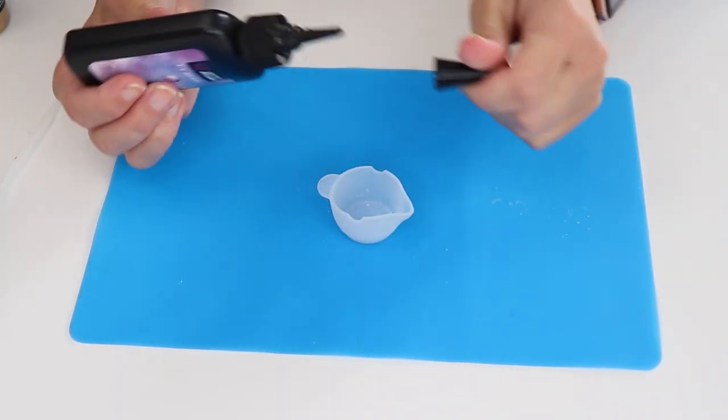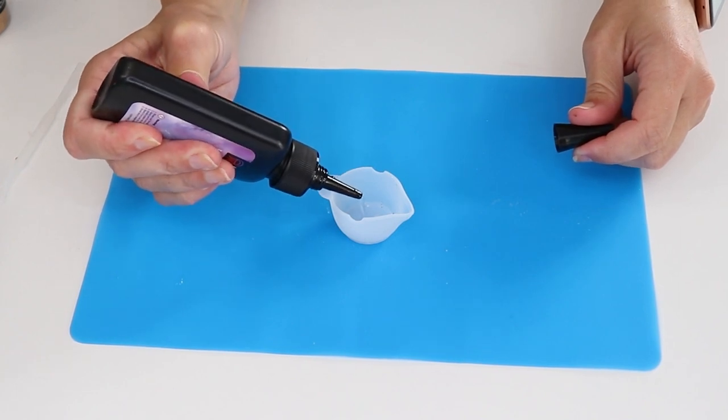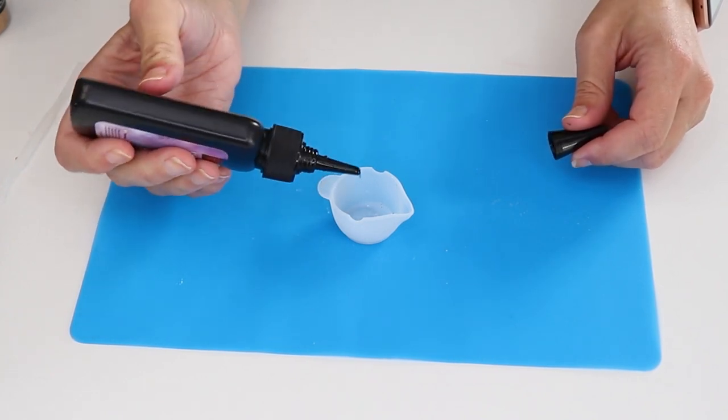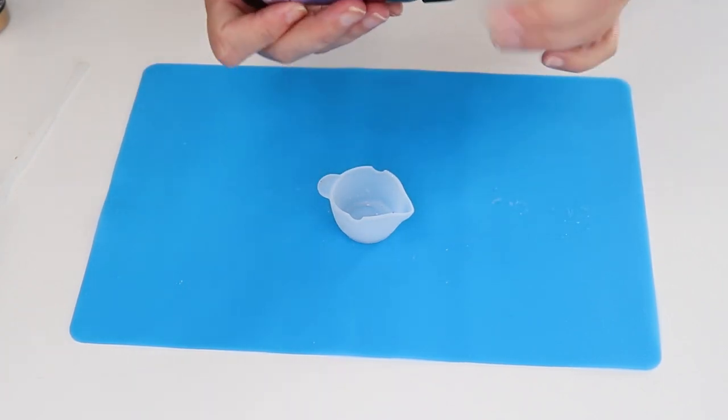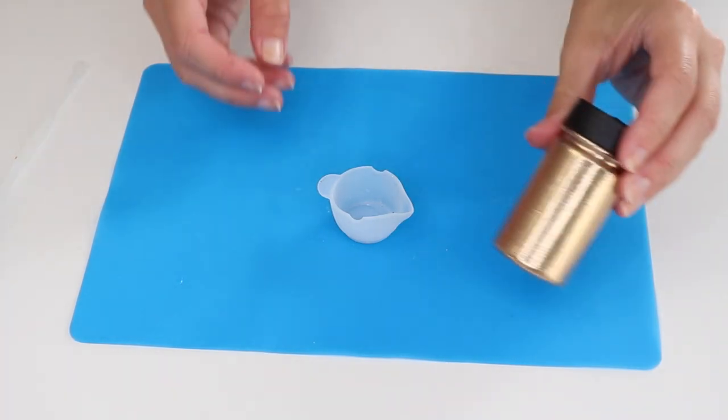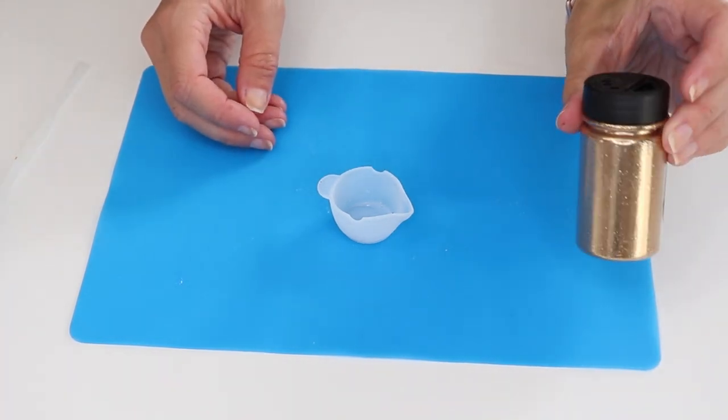I'm going to start by adding a small amount of the UV resin to this little silicone container. There are all types of dyes and colorings that you can add to resin. Today I'm using a super fine gold glitter.